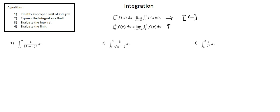We'll work through three examples of evaluating improper integrals. When we get to the end of each evaluation, we'll either arrive at a quantity — which indicates the value of the integral — or we'll arrive at infinity, which indicates that the limit does not exist, meaning the area under the function for the given limits of integration is infinite. Now let's work through our examples.